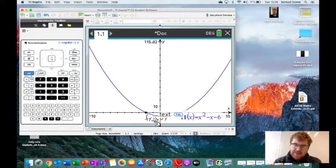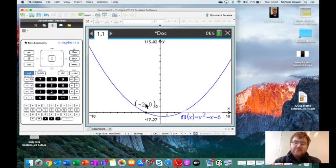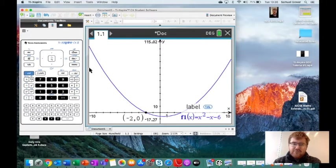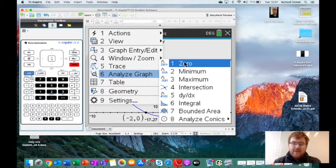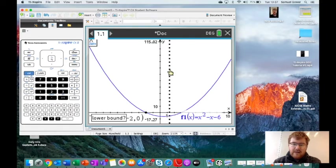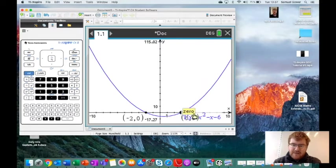Then you've got your coordinate of minus 2, 0. What's even better is you can actually take the coordinates and move it so if it's in the way you can see it more clearly. Likewise, if I want to find this root here, I go to Menu, Analyze Graph, Zero, click before it, click after it, and there we have it: 3, 0.